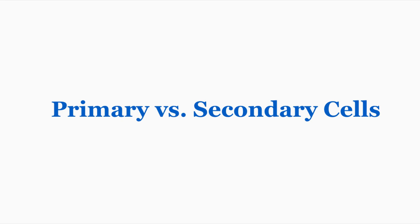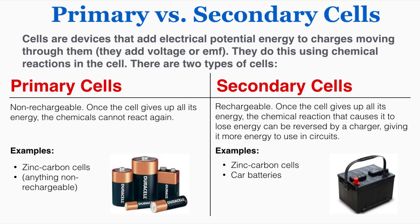This is going to be a very quick video on primary versus secondary cells. Cells are devices that add electrical potential energy to charges moving through them — they add voltage or EMF. They do this using chemical reactions in the cell.